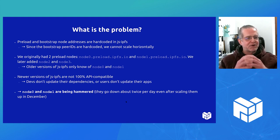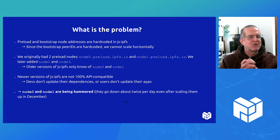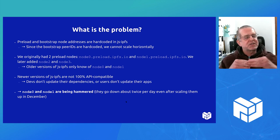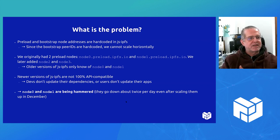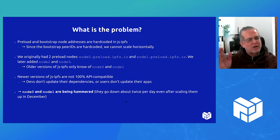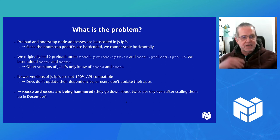I discovered this during the first thing I did when I joined Protocol Labs, which was to scale up the preload nodes — node 0 and node 1. Even after the scaling, because they were crashing every half hour to one hour, GoIPFS was running out of memory. We scaled them up, and now they're crashing only twice a day, more or less. So it's better, but of course not ideal.